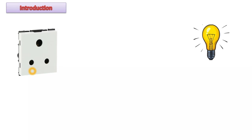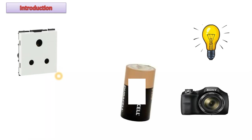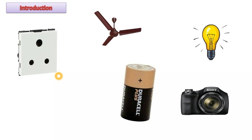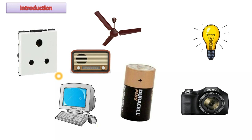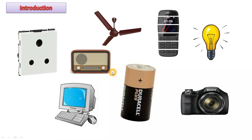Electricity provides power to various buildings, electrical devices, and automobiles. Whether you talk about computers, fans, bulbs, or all the electrical appliances in your house — everything works due to electricity. Battery-operated devices like mobile phones, alarm clocks, and cameras are also dependent on batteries.